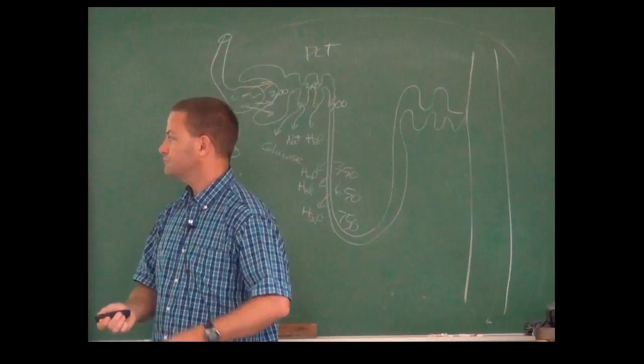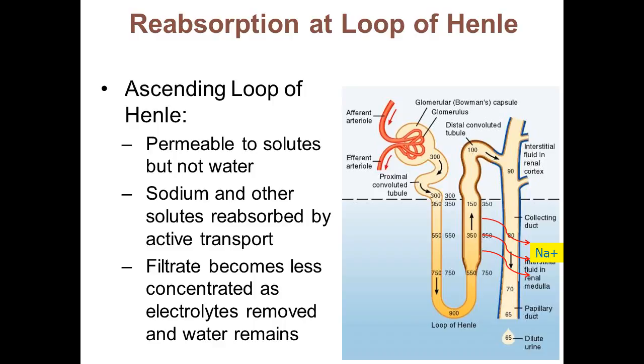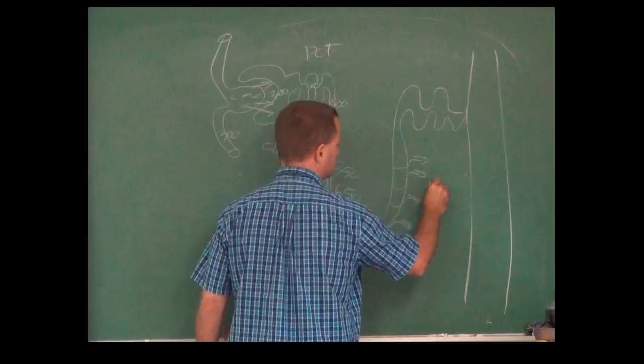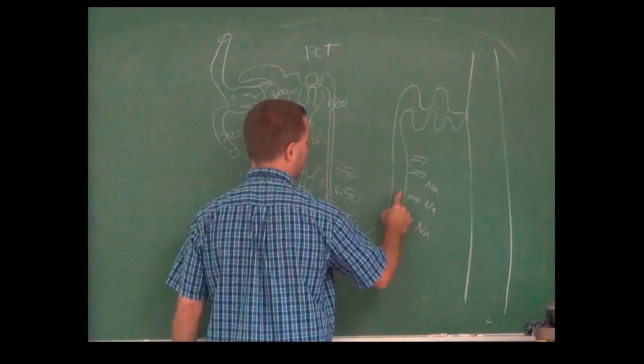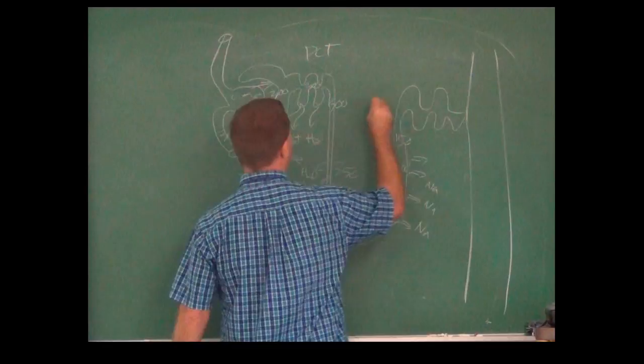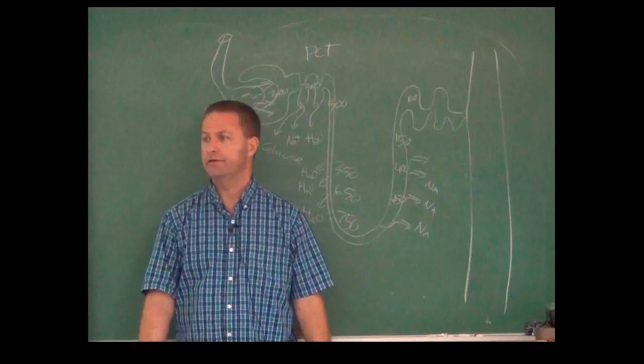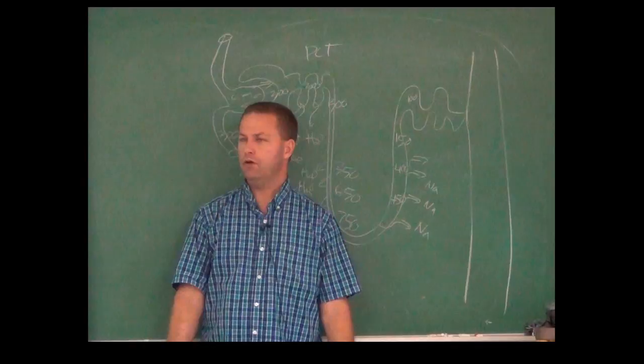As we go deeper into the medulla, it gets saltier, which helps draw water out. On the ascending limb, on the other hand, we're permeable to salt — using active transport to get sodium back out — but not allowing water out. So the osmolality goes back down again: from about 750 down to 400, then 150, then about 100 milliosmoles by the time we reach the distal convoluted tubule. That's about a third of the saltiness of blood.